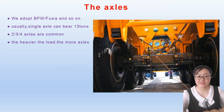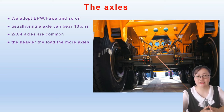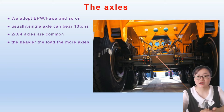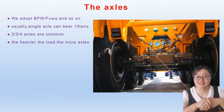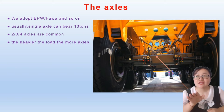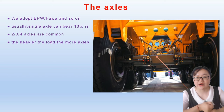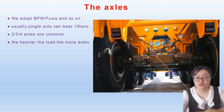Let's talk about the axles. We use BPW and FUWA axles, among others. Usually one single axle can bear 13 tons. Two axles, three axles, and four axles are common configurations — the heavier the load, the more axles needed. When you tell us the tonnage you want to carry, we can choose the right axle configuration for you.